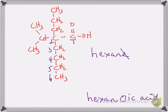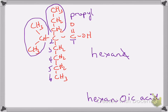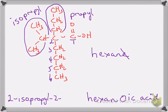The next thing is to add the substituents. I have two: one right here at carbon two that is a propyl group, and one also at carbon two that is an isopropyl group. So the proper name of this molecule is 2-isopropyl-2-propyl hexanoic acid.